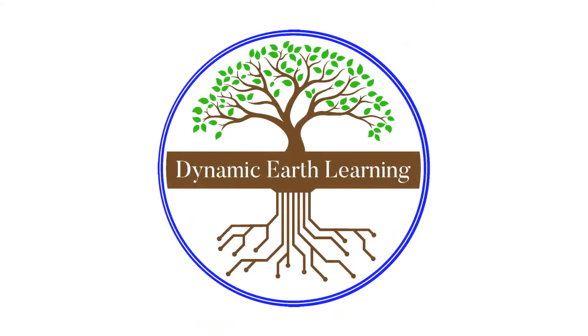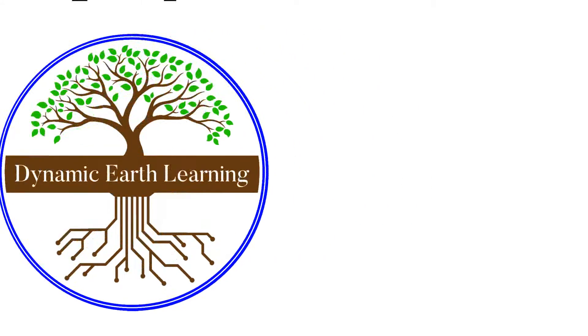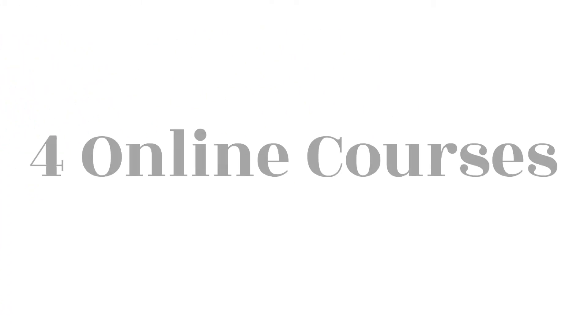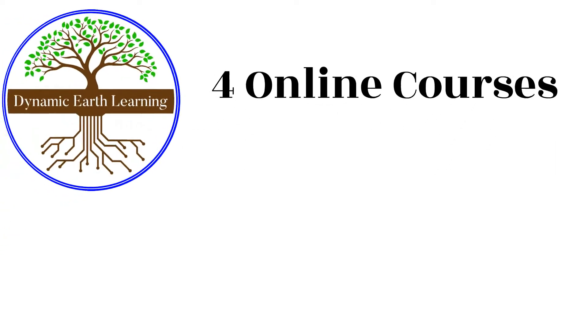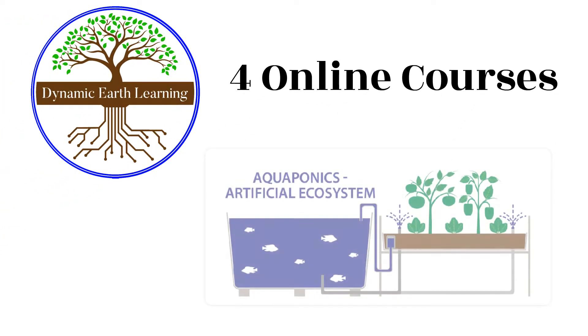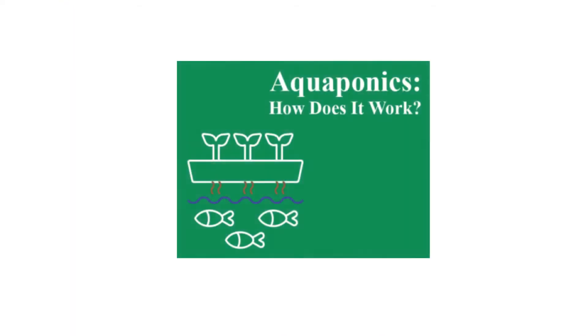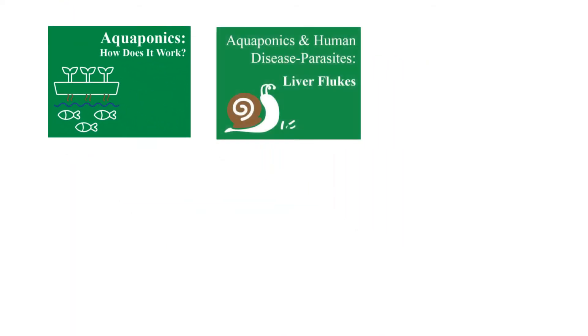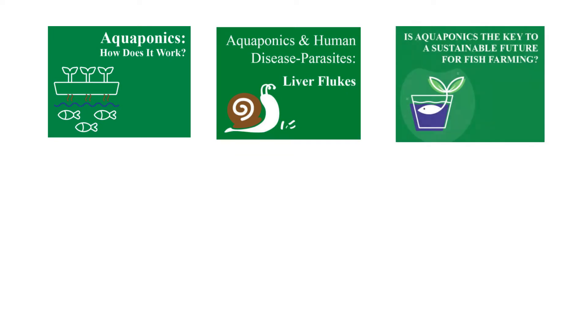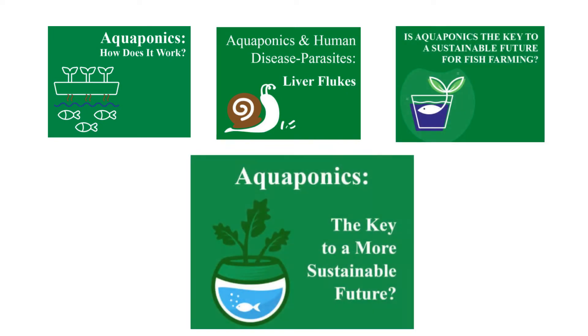The Aquaponics Bundle by Dynamic Earth Learning includes approximately four short one-hour courses on the topic of aquaponics. Your student will learn about how aquaponics works, aquaponic diseases and parasites, sustainable fish farming methods, and whether or not aquaponics is the key to a sustainable future.